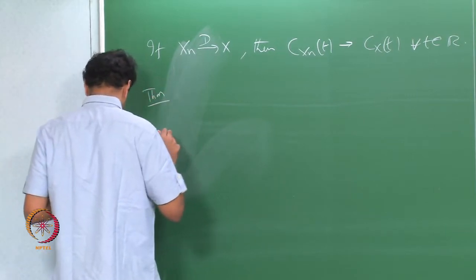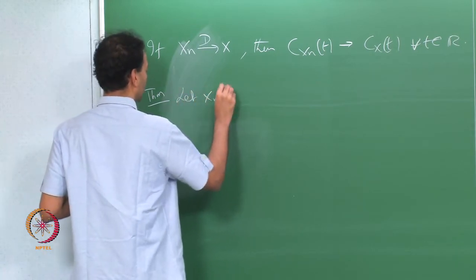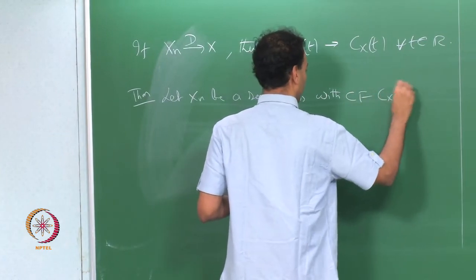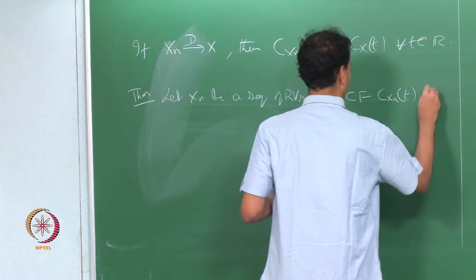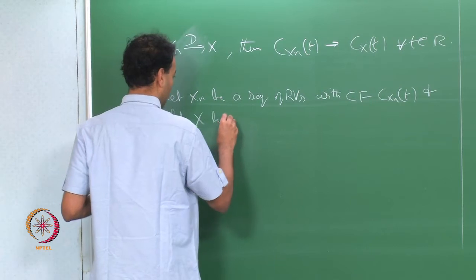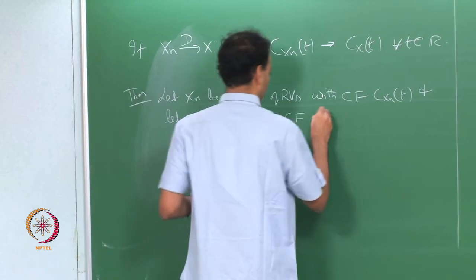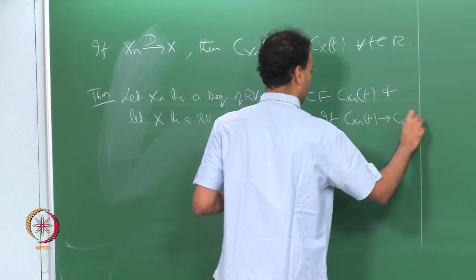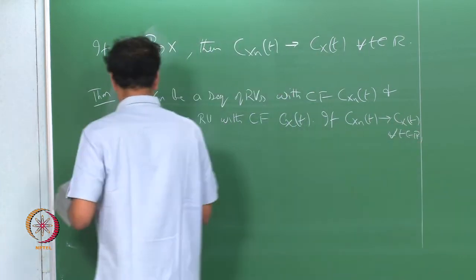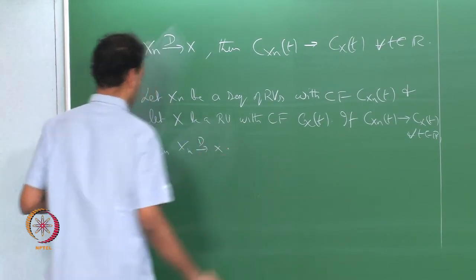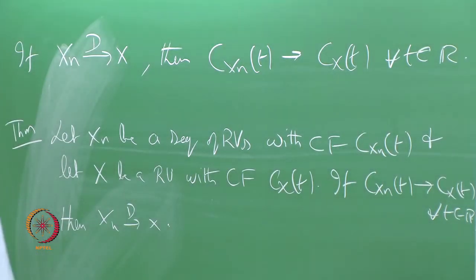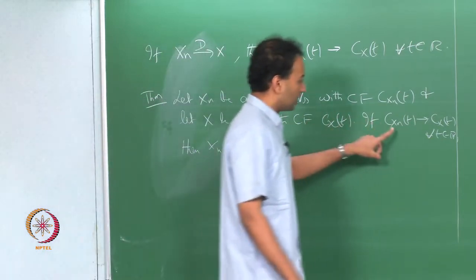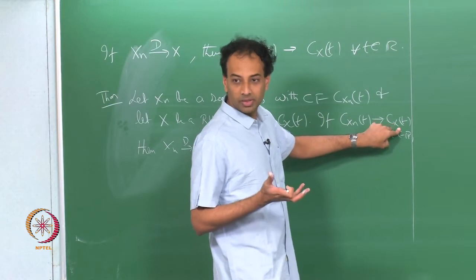Let x_n be a sequence of random variables with characteristic function c_{x_n}(t), and let x be a random variable with characteristic function c_x(t). If c_{x_n}(t) converges to c_x(t) for all t, then x_n converges to x in distribution. I did not state it precisely at the end of last class; this is the correct statement.